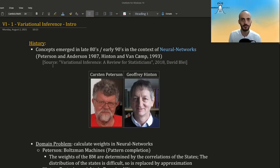So where did variational inference come from? The concepts emerged in the late 80s, early 90s in the context of neural networks. There are two papers that are mentioned as the start of VI. One is by Peterson and Anderson from 1987, and here is a picture of Peterson, and one is by Hinton and Van Kamp from 1993, and here is a picture of Hinton.